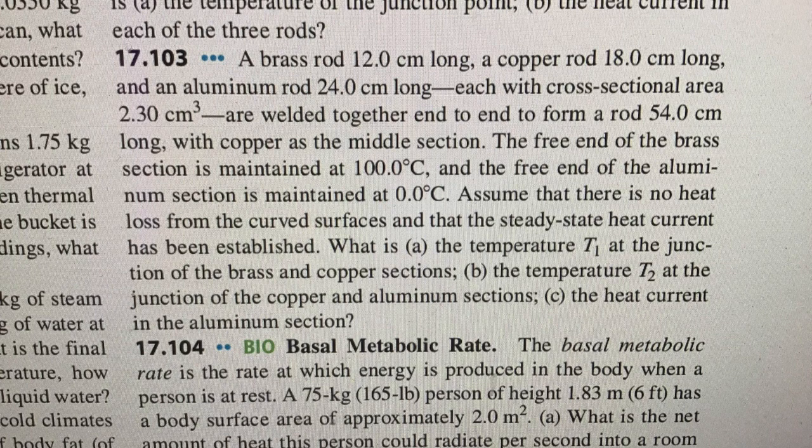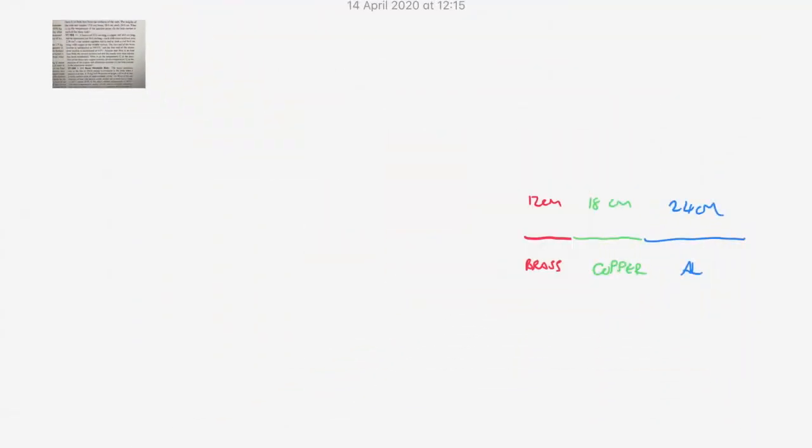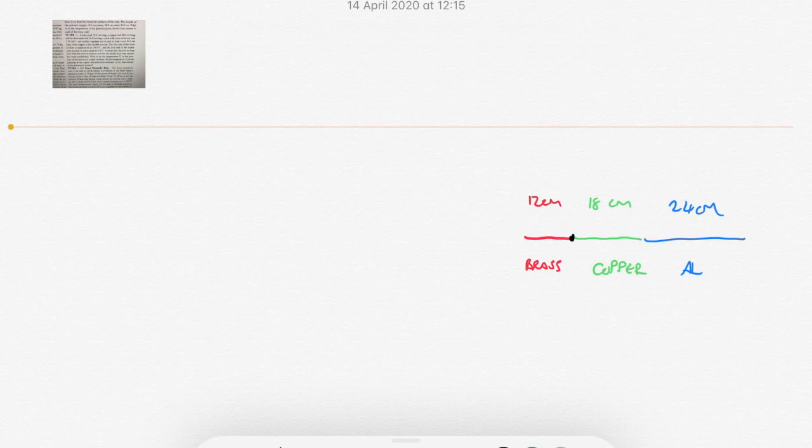So what's the temperature at the junction of the brass and the copper, at the junction of the copper and the aluminum, and the heat current through the aluminum section? Here's our schematic diagram of what's going on. We've got our three rods set up, brass, copper, and aluminum at their correct lengths. The first part of the question is asking what's T1 and what's T2. T1 is the temperature of the brass-copper interface, T2 is the temperature of the copper-aluminum interface.